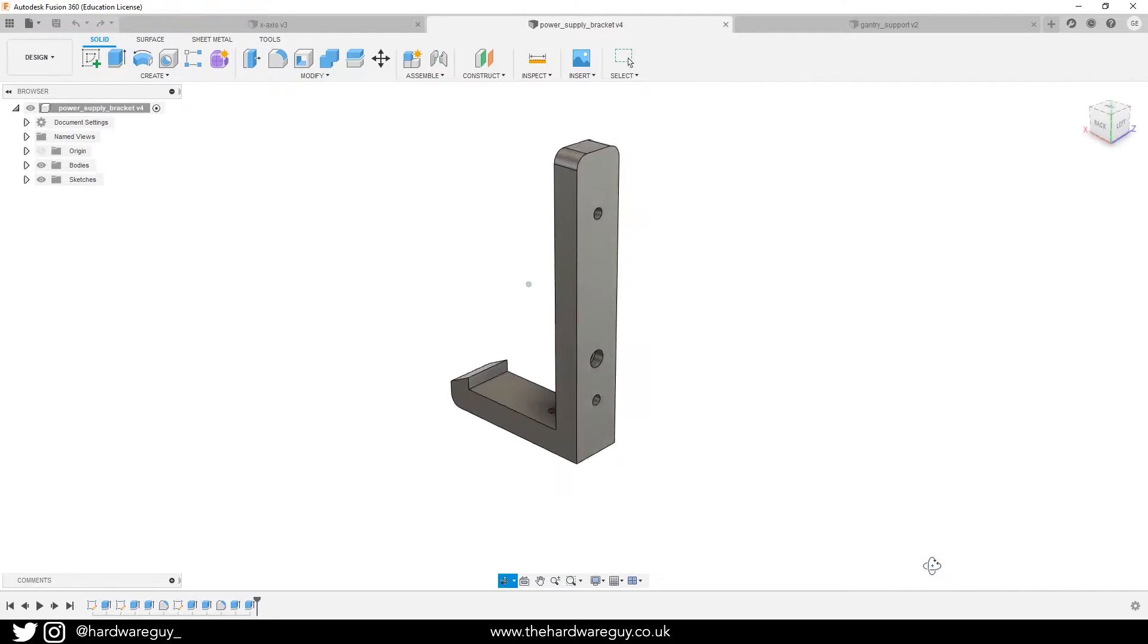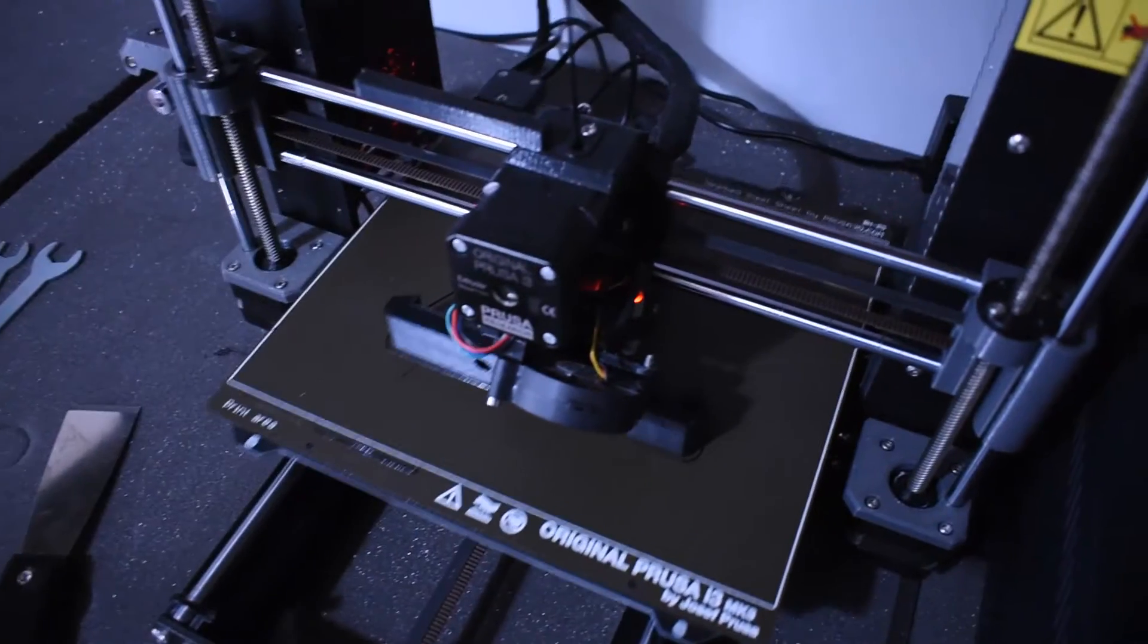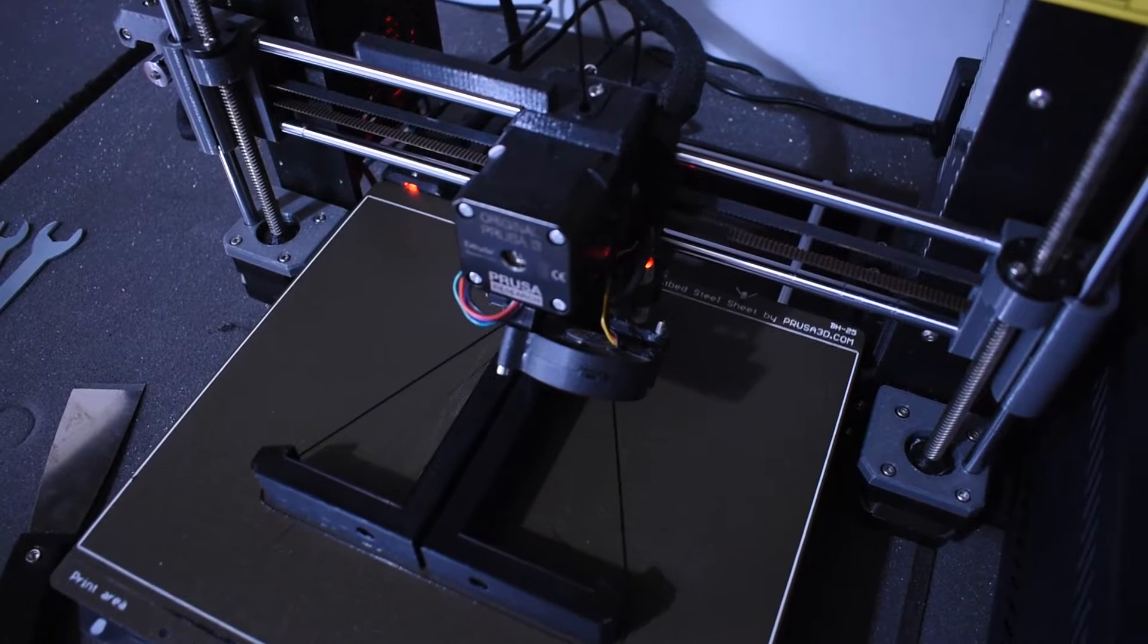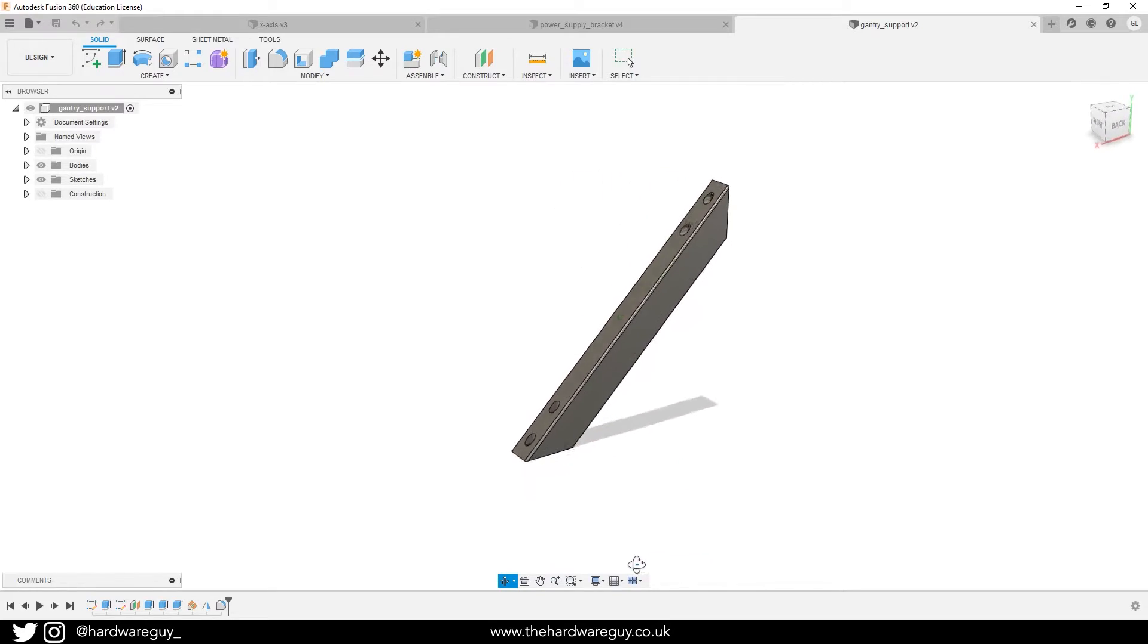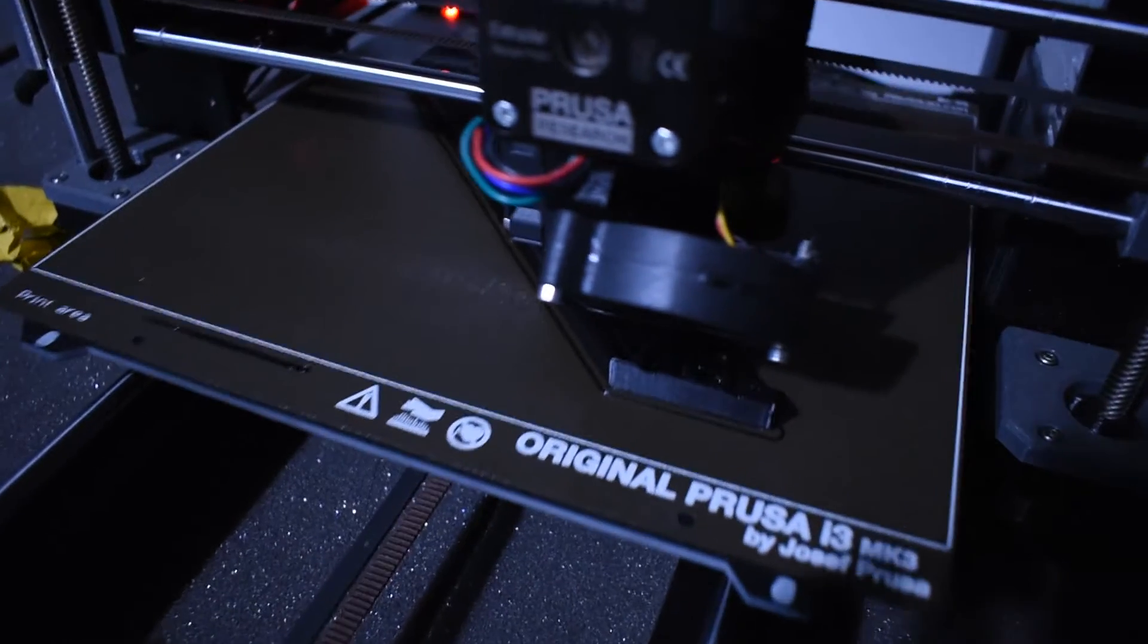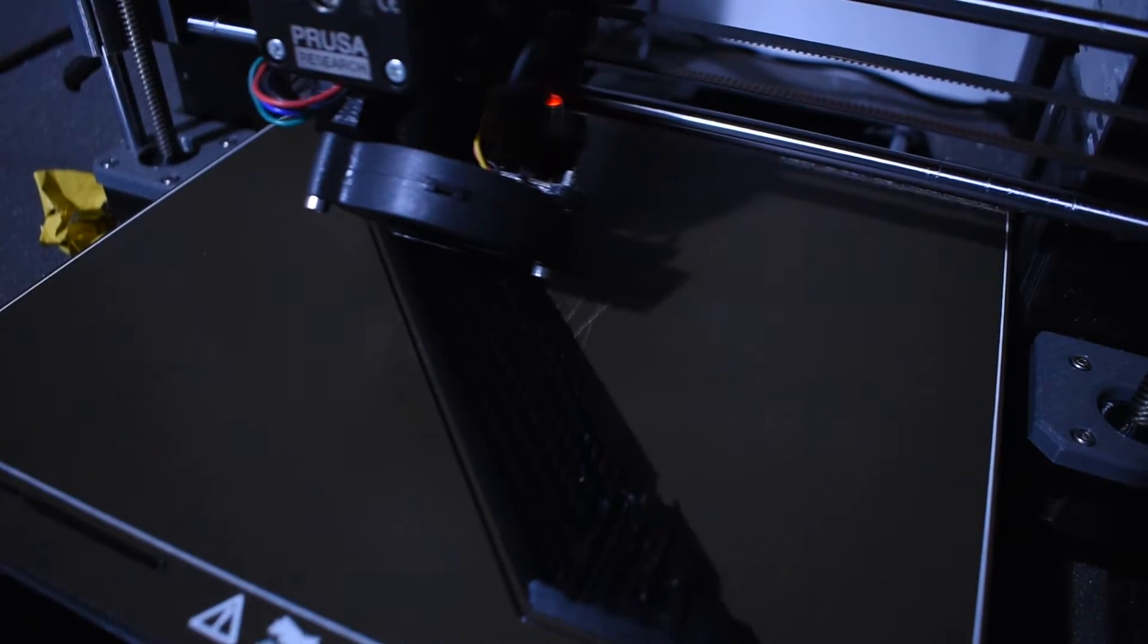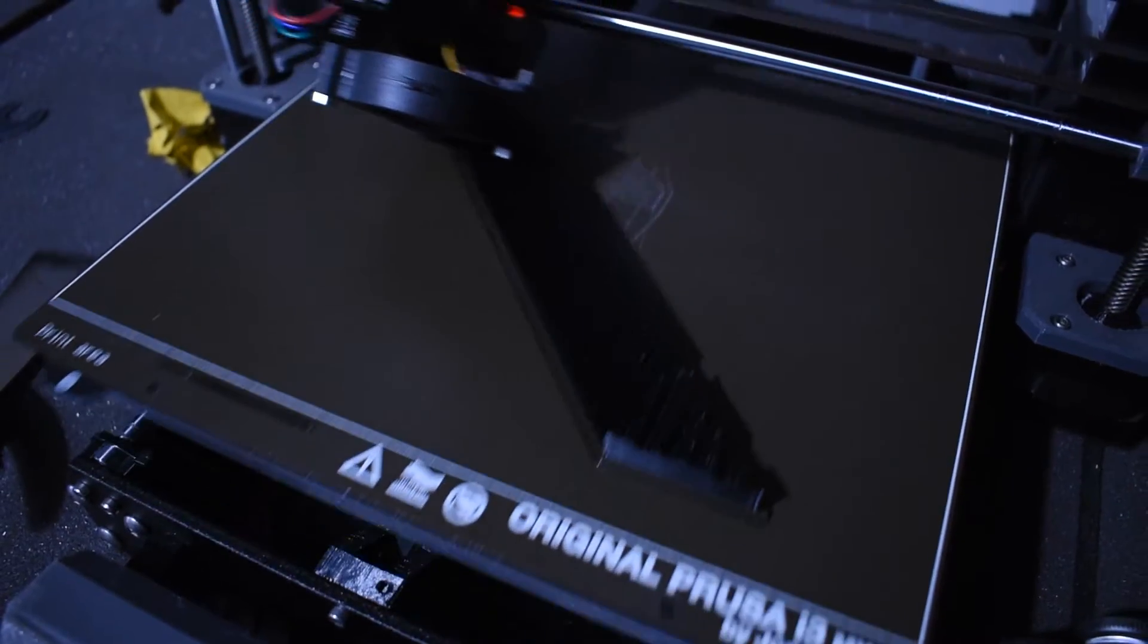In order to secure the power supply to the gantry, I printed two of these little brackets that I designed in Fusion 360. And these should serve great in holding the power supply to the frame. As I mentioned earlier, I also wanted to print some gantry reinforcers. These are much bigger and stronger than the ones that came with the stock machine. And they should do an excellent job at minimizing wobble on the gantry.